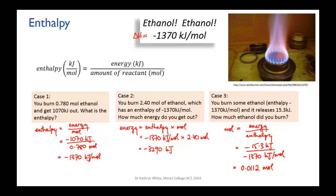As with the unit price of cherries, as long as you have two of the three quantities in this relationship, you can work out the last one. We can take this further by combining this enthalpy relationship with stoichiometry — where you know the mass of a reactant or product and the chemical equation, you can relate amounts of reactants and products to the energy absorbed or released. In the next video, we'll look at a couple of calculations of that sort.